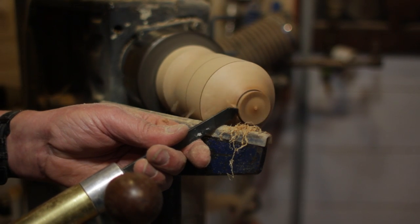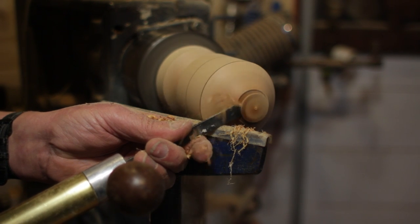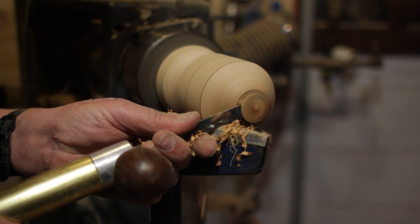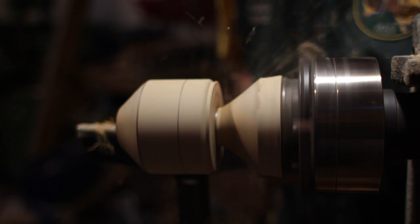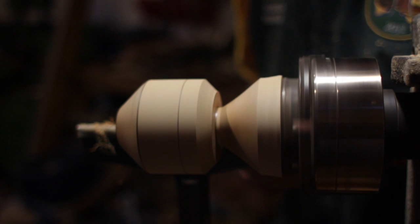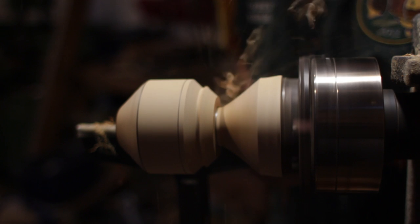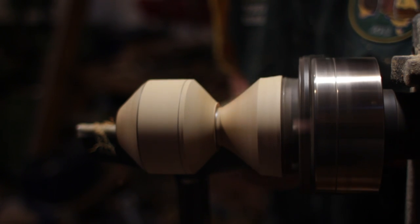Now with the parting tool we part off the little tenon that we created earlier. Now we do the same process on the other end. We cut away the waste wood between the two black lines. Again I emphasize accuracy leads to a good sphere.